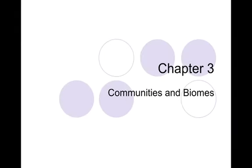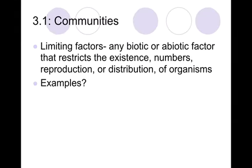Let's take a look at our community and biome notes — this is chapter 3. First of all, we know that limiting factors are going to help determine what's in our communities. Limiting factors are biotic and abiotic things that restrict the number of organisms, the way organisms reproduce, where they're distributed, and which ones exist.